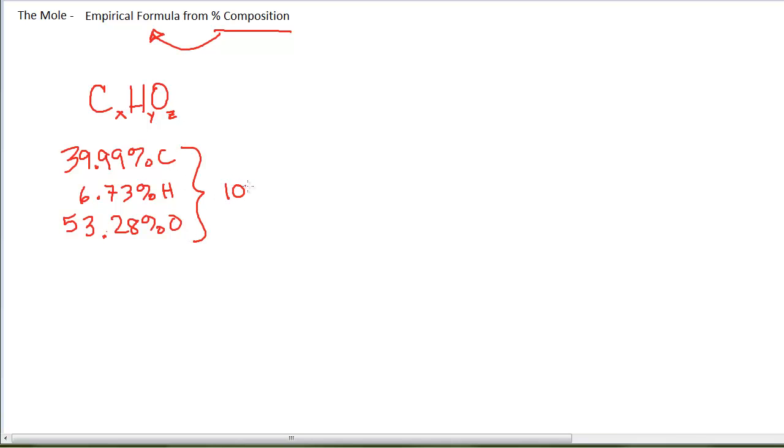So if I have a 100 gram sample, and that is a great assumption when you're given percentage information, that means there will be 39.99 grams of carbon, 6.73 grams of hydrogen, and 53.28 grams of oxygen.